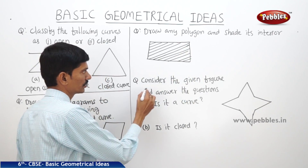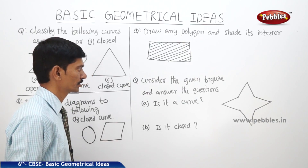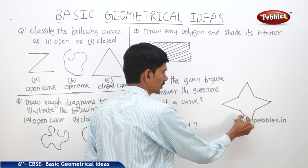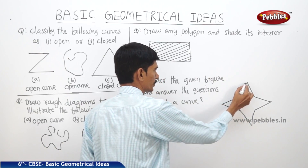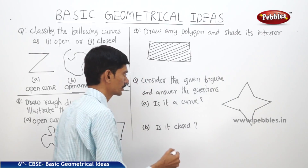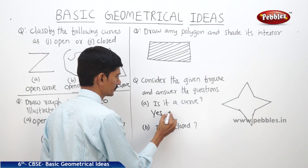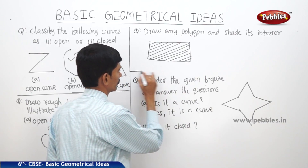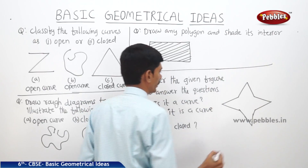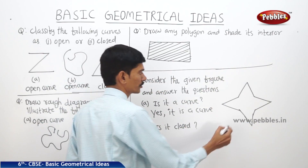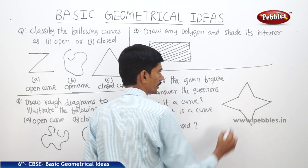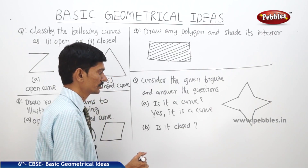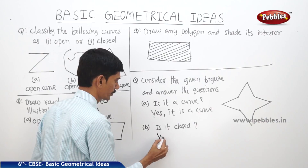The next question: consider the given figure and answer the questions. First, is it a curve? Yes, this drawing is drawn without lifting the pencil, so it can be considered as a curve. We can write: yes, it is a curve. Next, is it closed? The two end points of this curve are joined together, so we can say that it is a closed curve. We write: yes, it is closed.